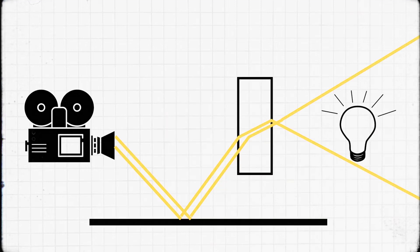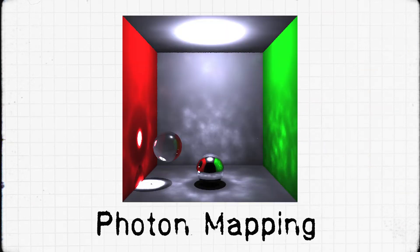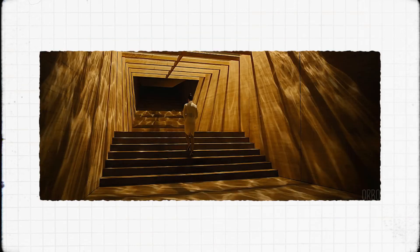So far, no one's figured out how to fix this, but there have been attempts such as photon mapping, which are faster but still take a very long time. But if it's so impossible, how did they do it for movies and TV shows?